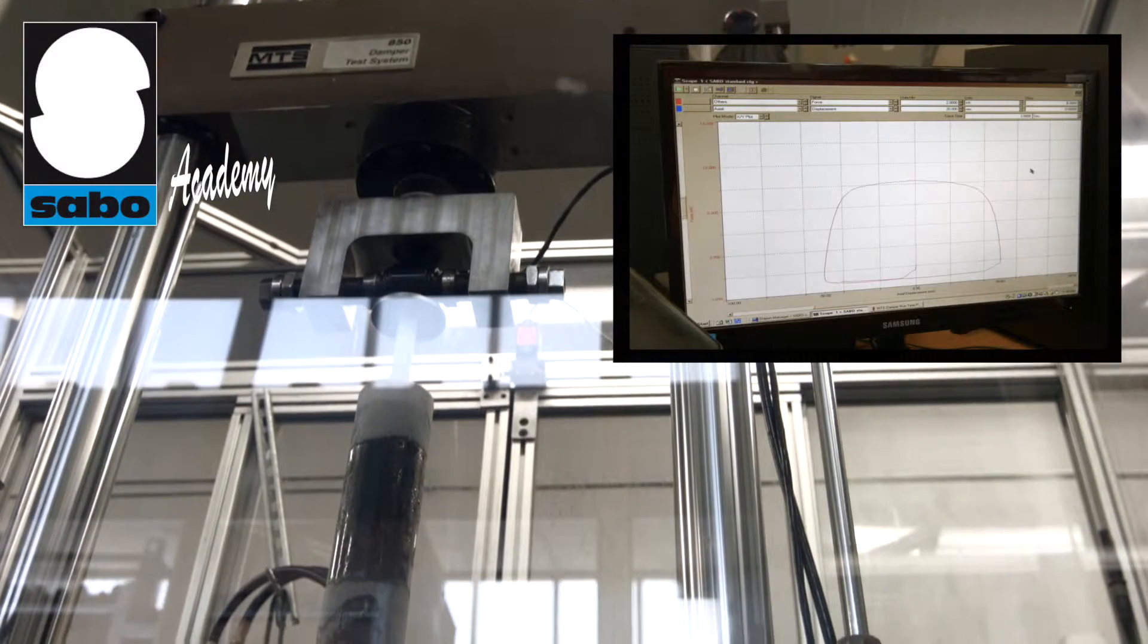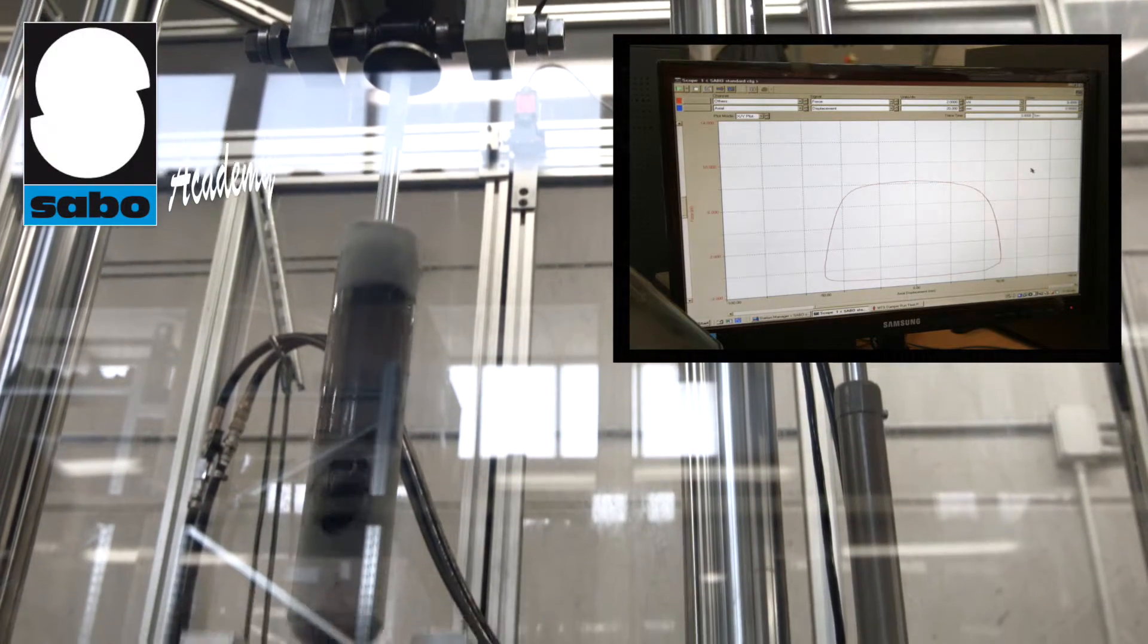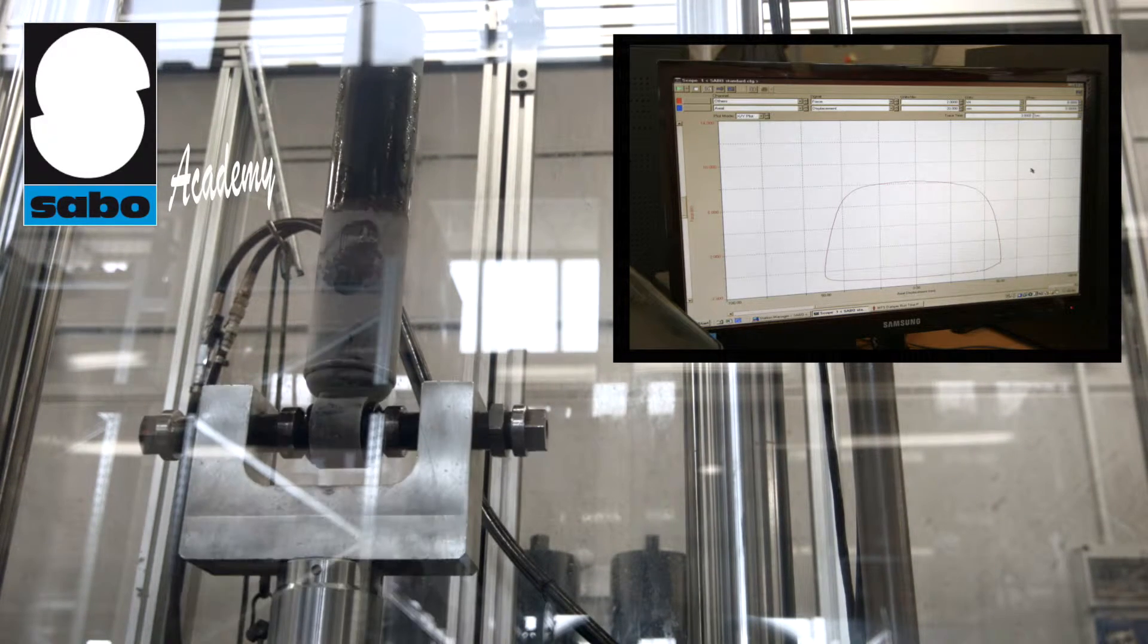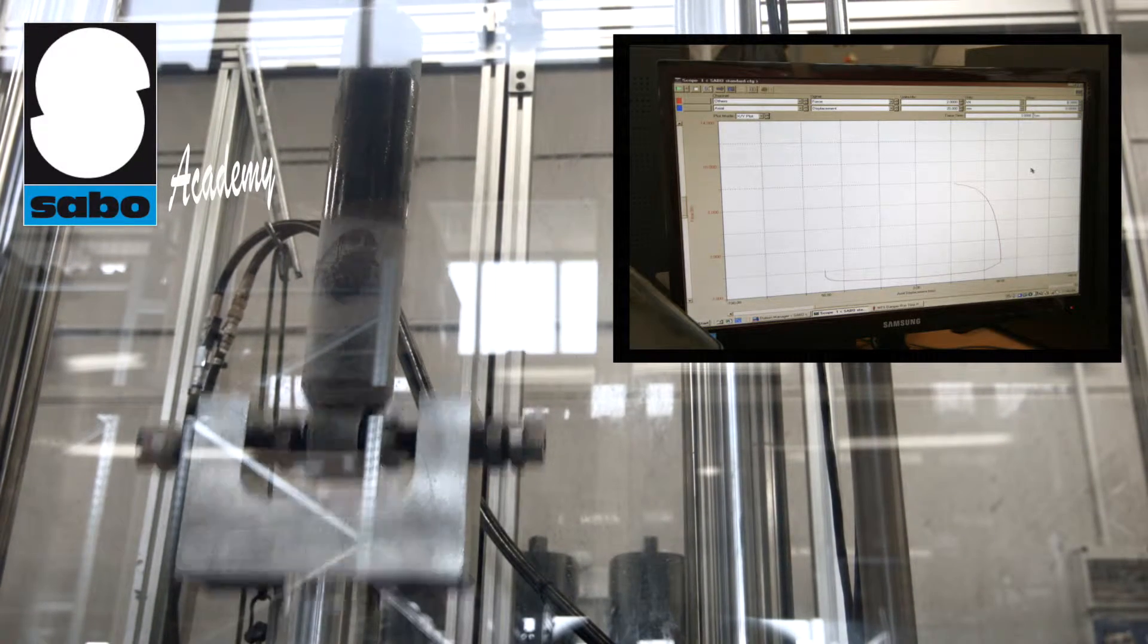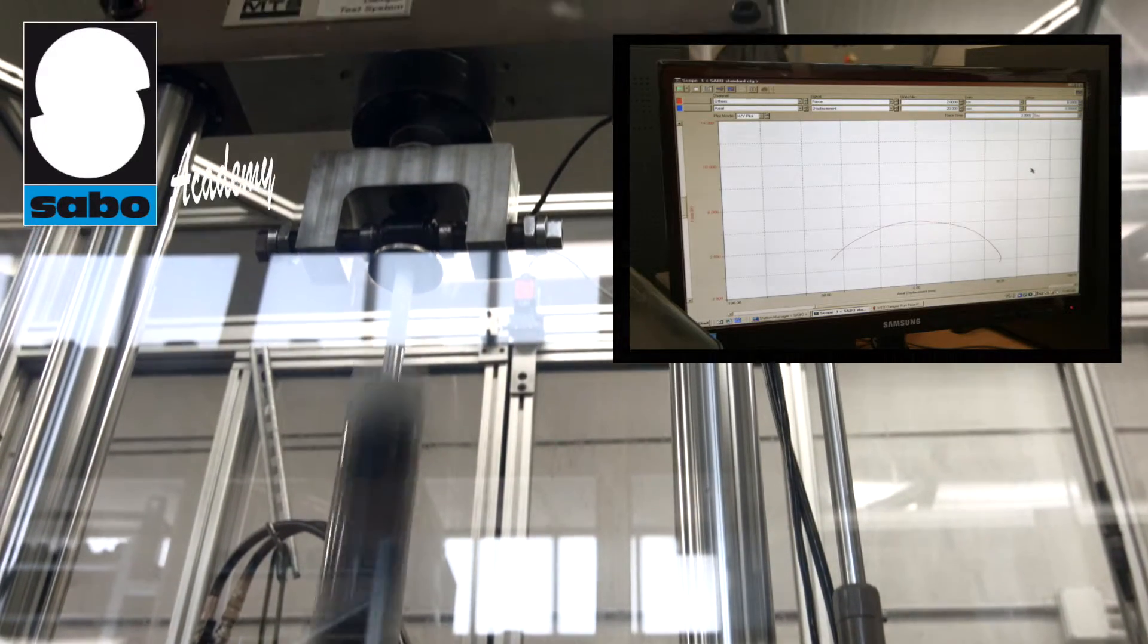In the second phase, it is removed from the chamber and tested on our MTS test bench using a detection program with standard braking characteristics. As you can see, the graphic representation is of the sinusoid wave type.